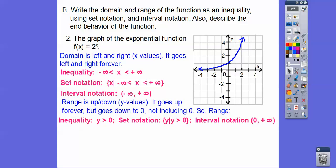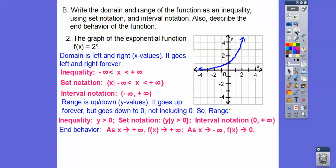It goes up forever, but it doesn't go down forever, and it does not include 0. So our range is y is greater than 0. In set notation: the set of y such that y is greater than 0. Since 0 is not included, we have a parenthesis next to 0, comma, infinity. End behavior: as x goes to infinity — as we go to the right — the graph goes up, so f(x) goes to infinity. And as x goes to negative infinity, f(x) bottoms out to 0. It never touches 0 — it infinitely gets close to 0. So as x goes to negative infinity, f(x) goes to 0.